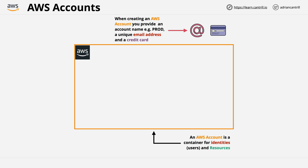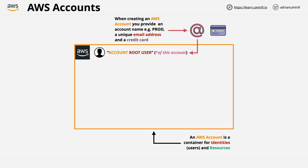The email address that you provide when creating the account is used to create a special type of identity within the AWS account, known as the account root user. Every AWS account has an account root user. If you create a production AWS account, the account root user of that account can only log in to that one production AWS account. If you make another AWS account — say a developer account — then that account will have its own unique account root user with its own unique email address.